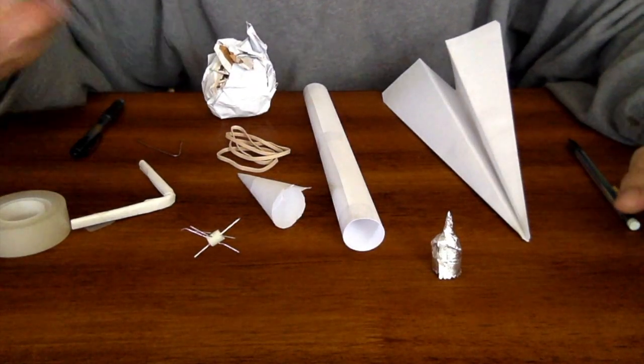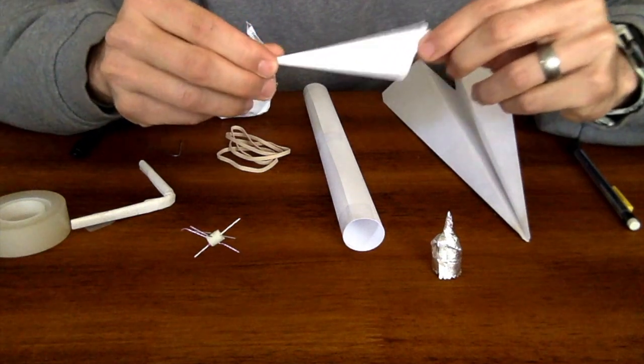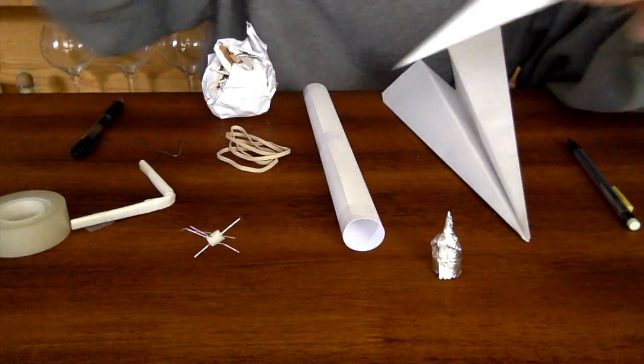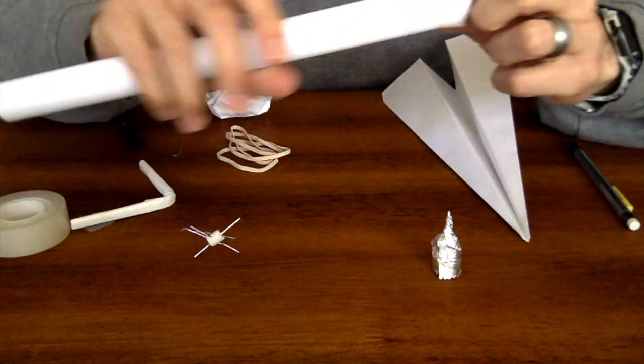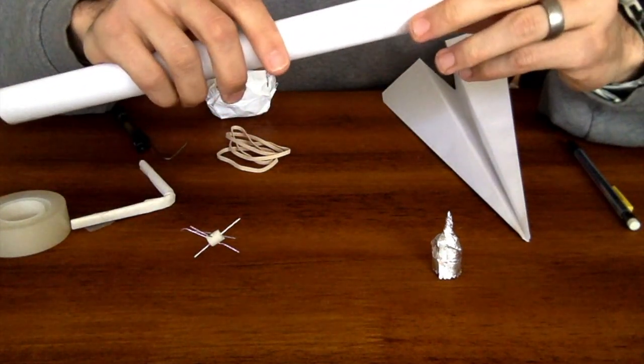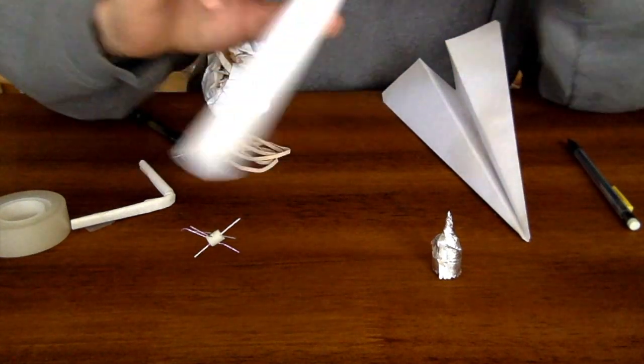One of my favorites is the blow dart. So these you can just kind of fold out of a paper into like a cone shape and you get your tube and you can kind of just funnel these into there. It takes a little practice and maybe we'll make a video later on. And then it kind of just shoots out the other end.